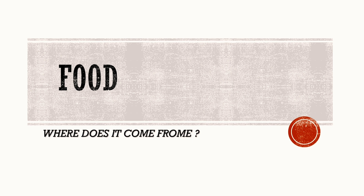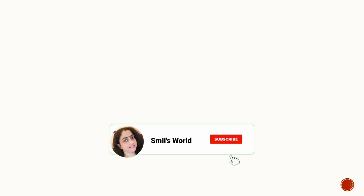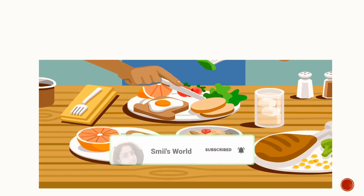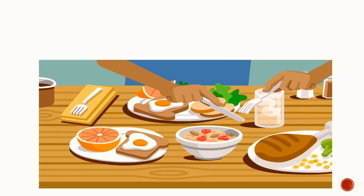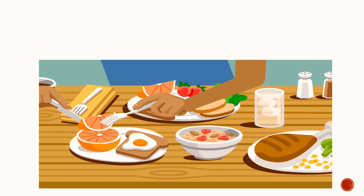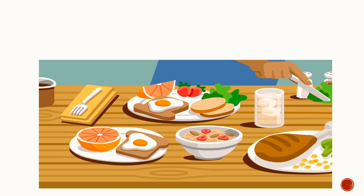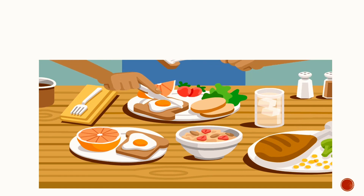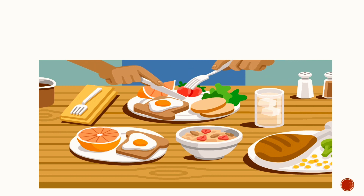Hi, my dear children, hope you all are fine. Today we are going to learn about food. We all know that food is essential for us and all other living organisms. In this chapter, we are going to learn about how food ingredients occur and where they come from. Did you eat the same kind of food every day? No, we all eat different kinds of food at different times. There is a lot of variation.